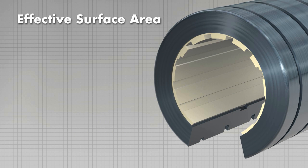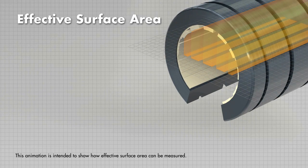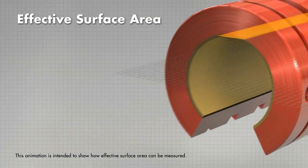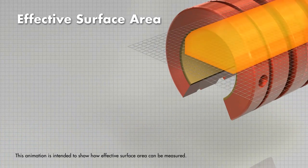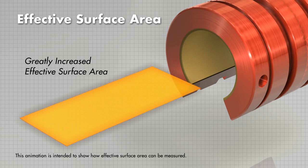Let's quantify exactly how much of a difference there is between the two types of bearings. To do this, we need to understand how to calculate effective surface area. Effective surface area is the area of the shaft that can actually carry load. This is normally done by creating a 2D plane that is normal to the applied radial force and bisects the bearing through its center. The actual surface area is then projected onto this plane. We will use SOLIDWORKS to project and measure the area.